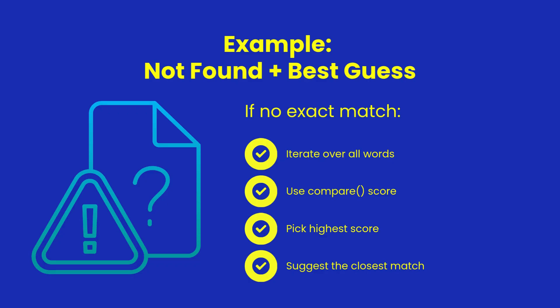When the lookup fails, we collect every row in the dictionary cluster and compute a similarity score using Shear Power's built-in compare function. The entry with the highest score becomes our recommendation. This is often enough to catch typos or near spellings and give the user a useful suggestion.